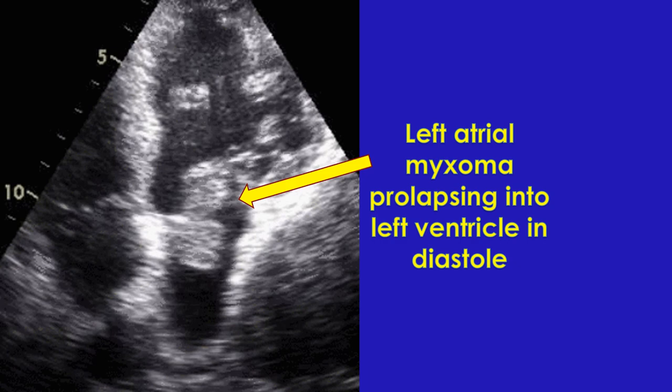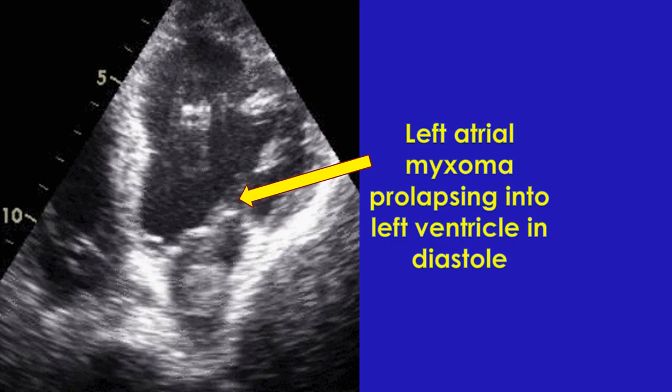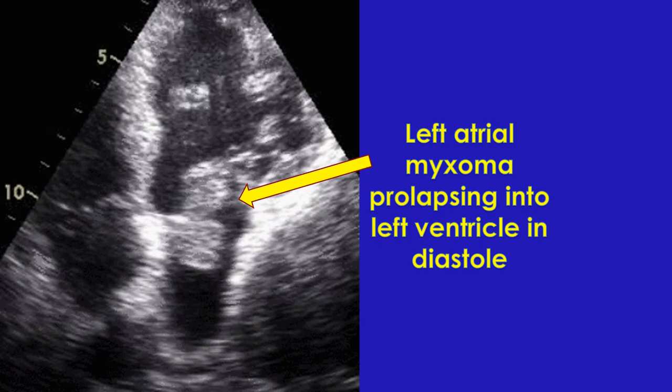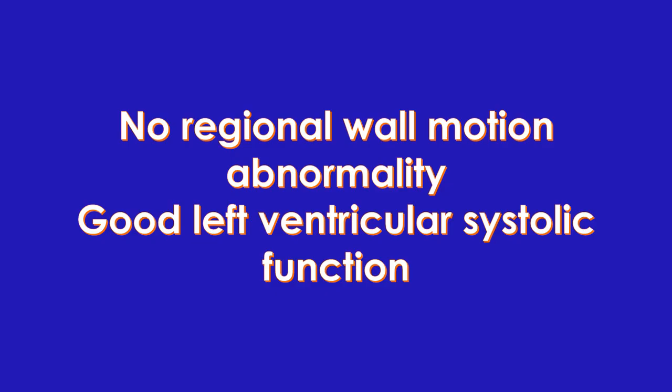The commonest cardiac tumours are myxomas, of which left atrial myxoma is the most common. Left atrial myxoma usually prolapses into the left ventricle in diastole as it has a long stalk. Rhabdomyomas may be noted in the ventricles, especially in infants. After the descriptive report and the measurements, the final conclusion is usually reported at the end. In a normal adult study, it may read as no regional wall motion abnormality, good left ventricular systolic function — RWMA may also be used as an abbreviation.